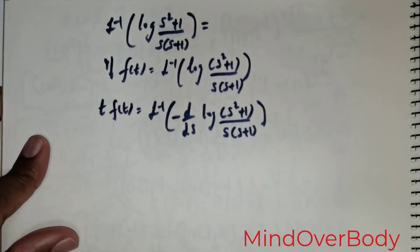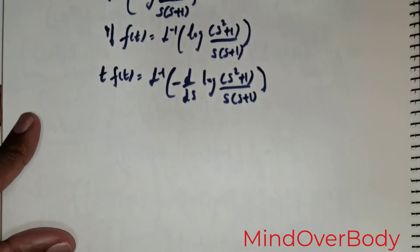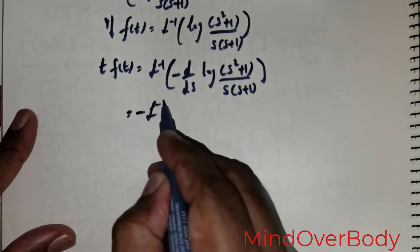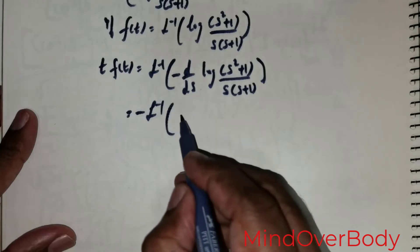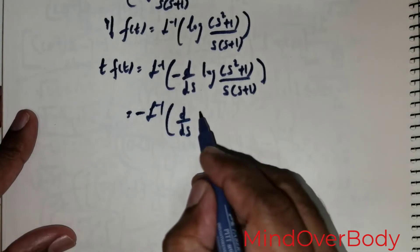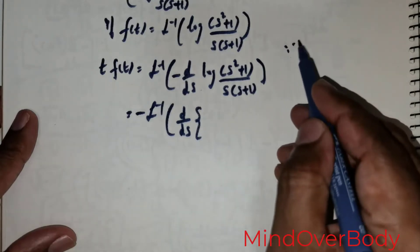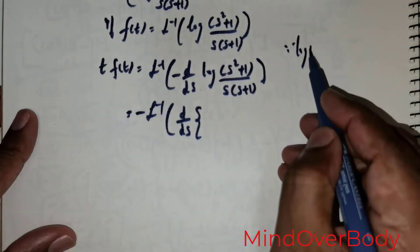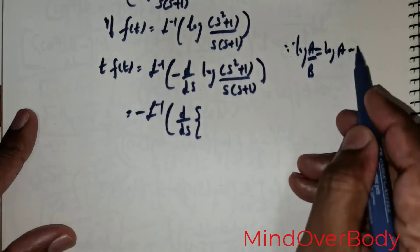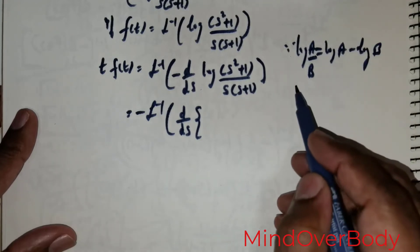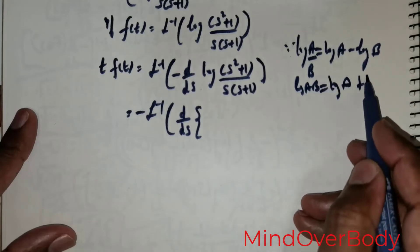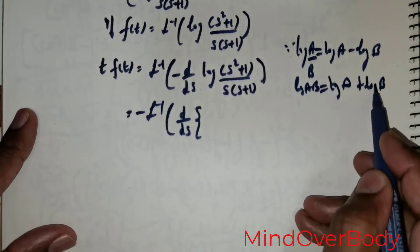So this is what we have got. First I would take the negative sign out, and then before operating with d over ds, I will use the logarithmic concept. Log of a over b is equal to log a minus log b. And we also know log of a times b is log a plus log b.